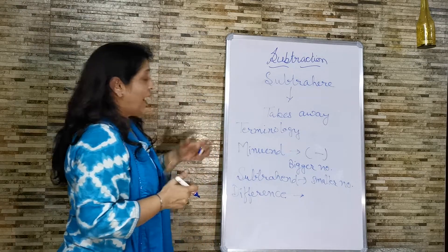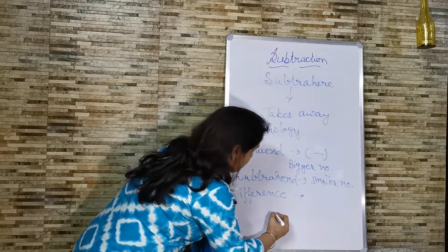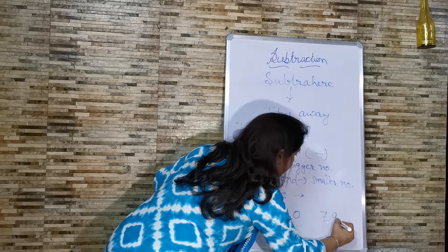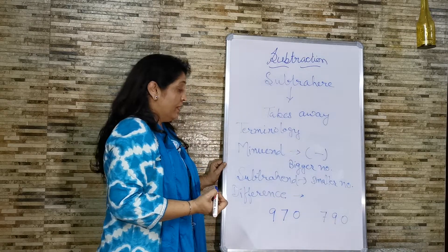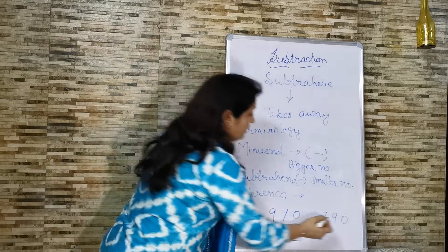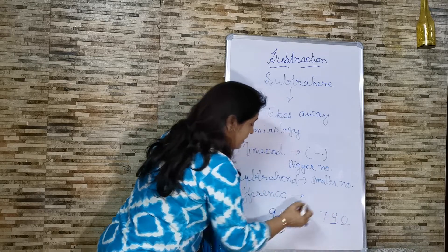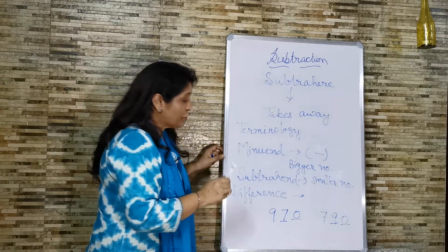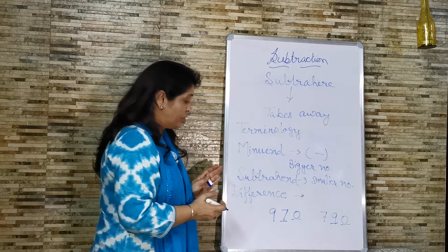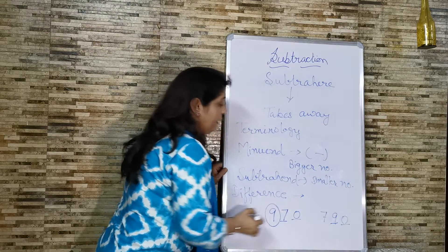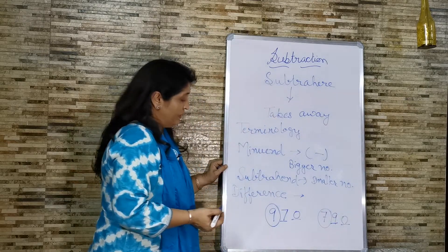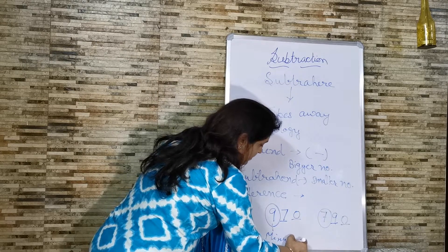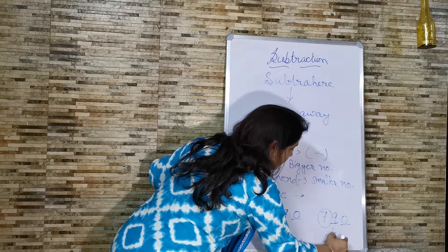Now, suppose children, how do we find out which is the minuend? I am giving you two numbers: 970 and 790. How to find out which is bigger? You might think the last digits are the same — 0 and 0. But first of all, we look at the number on the extreme left. The left-side digits are 9 and 7. Since 9 is bigger than 7, 970 becomes the minuend and the smaller number, 790, becomes the subtrahend.